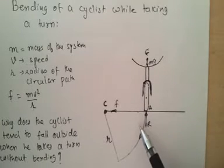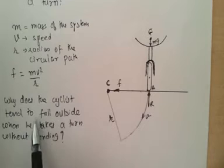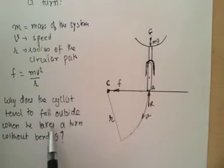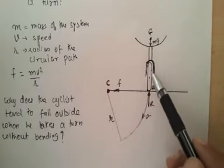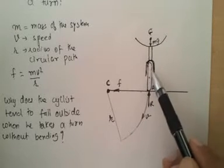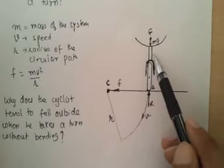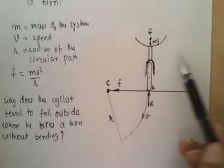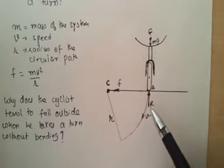The question we are trying to address here is: why does the cyclist tend to fall outwards when he takes a turn without bending? We have experienced that when we try to negotiate a turn without bending — that means we are erect and not bending inwards — we have a tendency to fall outwards. Why does that happen? That is something which we are going to look at in this video.